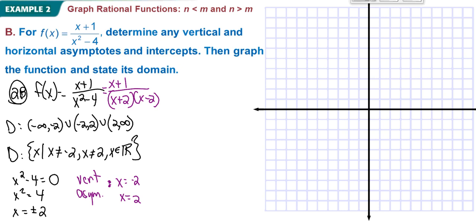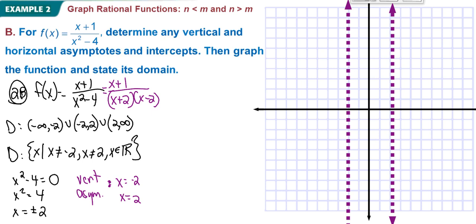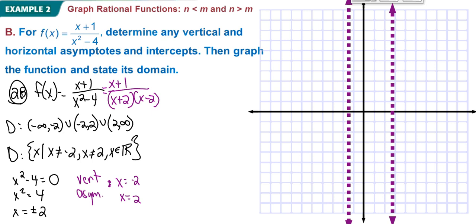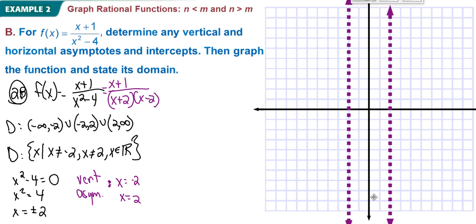I'll draw in both vertical asymptotes at negative 2 and positive 2. For horizontal asymptotes, the numerator is x to the 1st power and the denominator is x to the 2nd power — it's x to the low over x to the high — so the horizontal asymptote is at y equals 0.